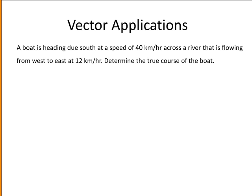In this question we are told that a boat is heading due south at a speed of 40 km per hour across a river that is flowing from west to east at 12 km per hour. We are asked to determine the true course of the boat.